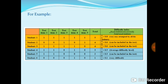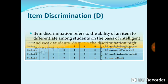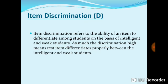Item discrimination is basically the ability of an item to differentiate among students on the basis of their ability — distinguishing intelligent students from weak students. The higher the discrimination, the better the item differentiates. If a test item does not properly differentiate between intelligent and weak students, the item is not good.